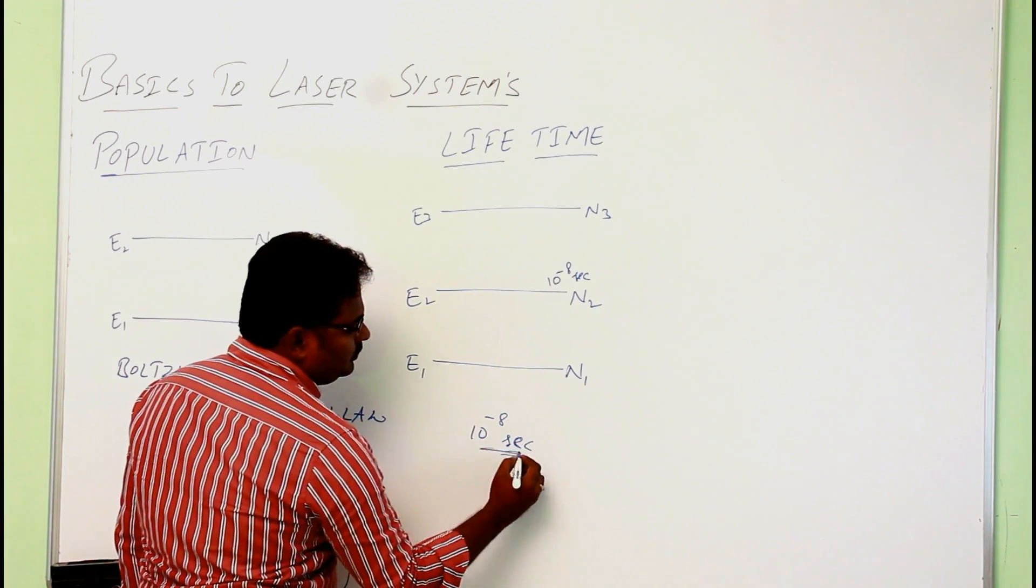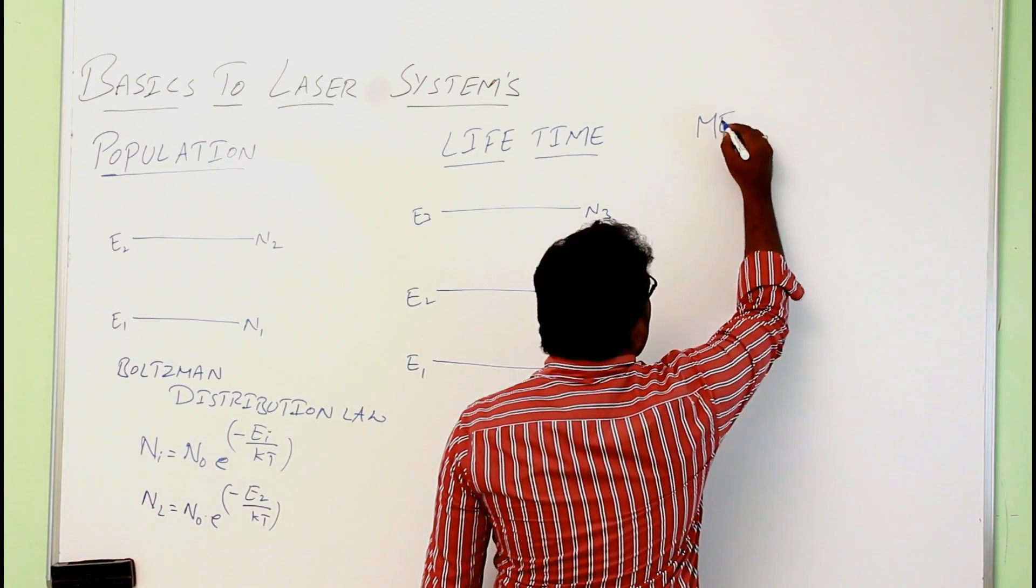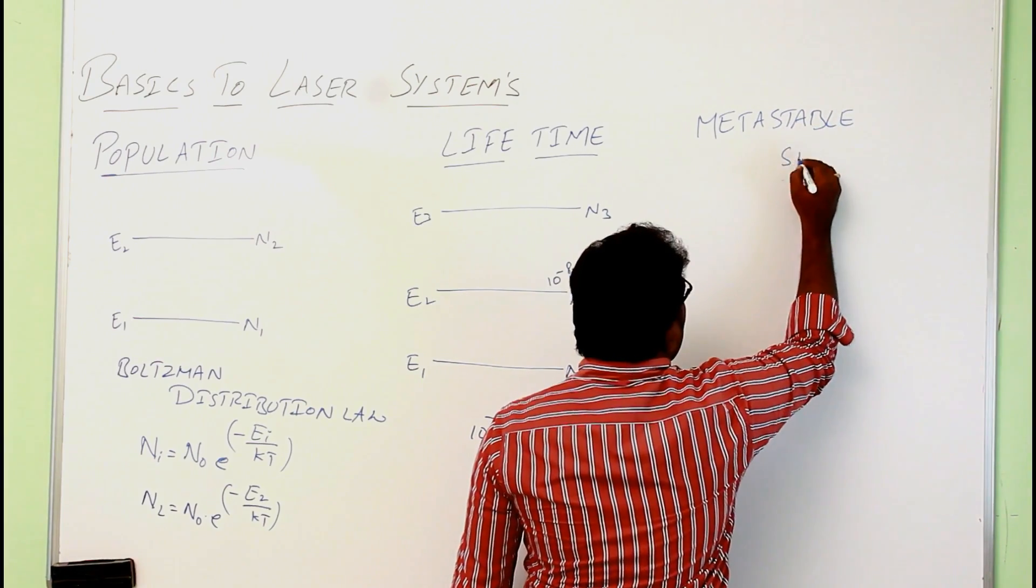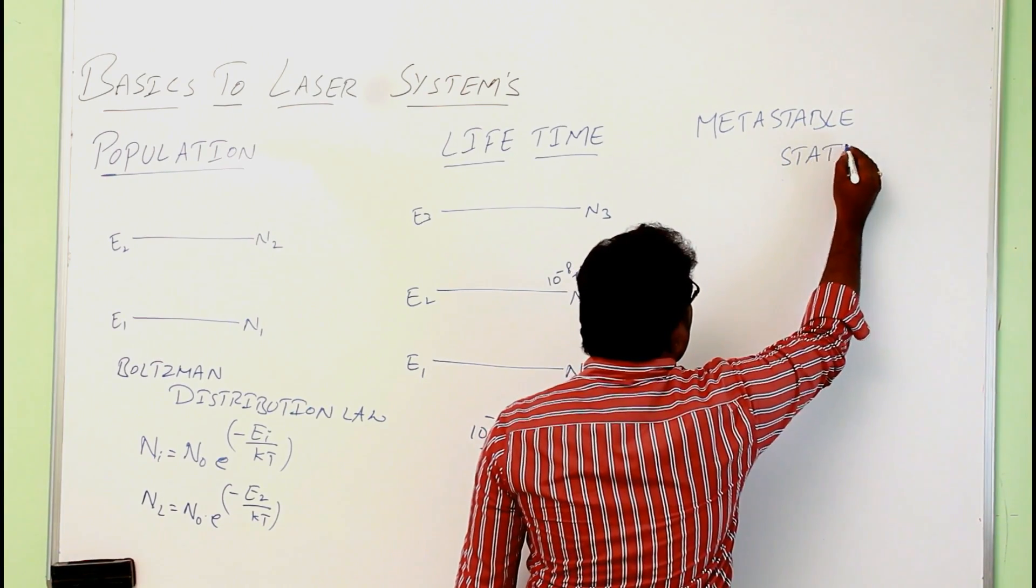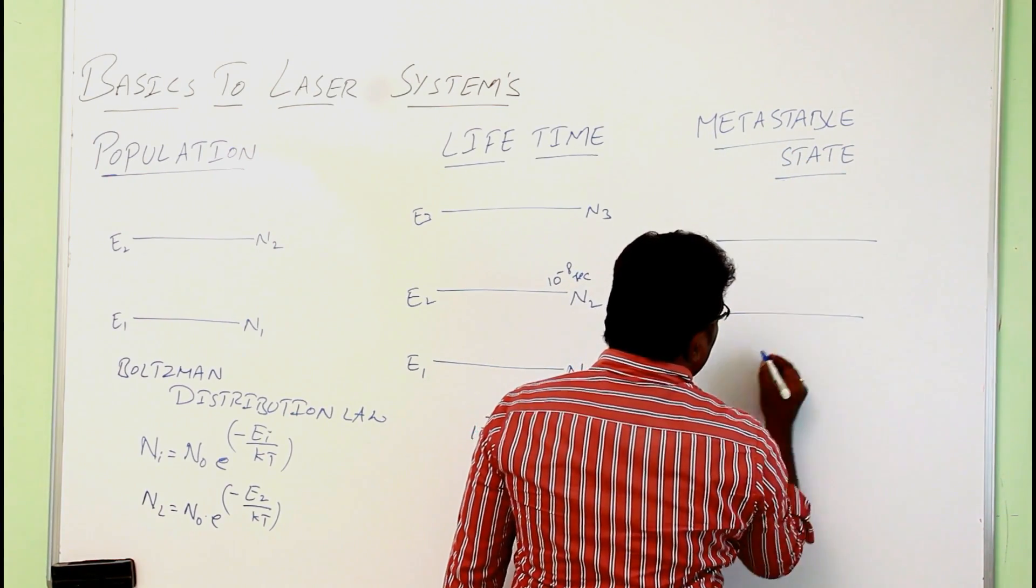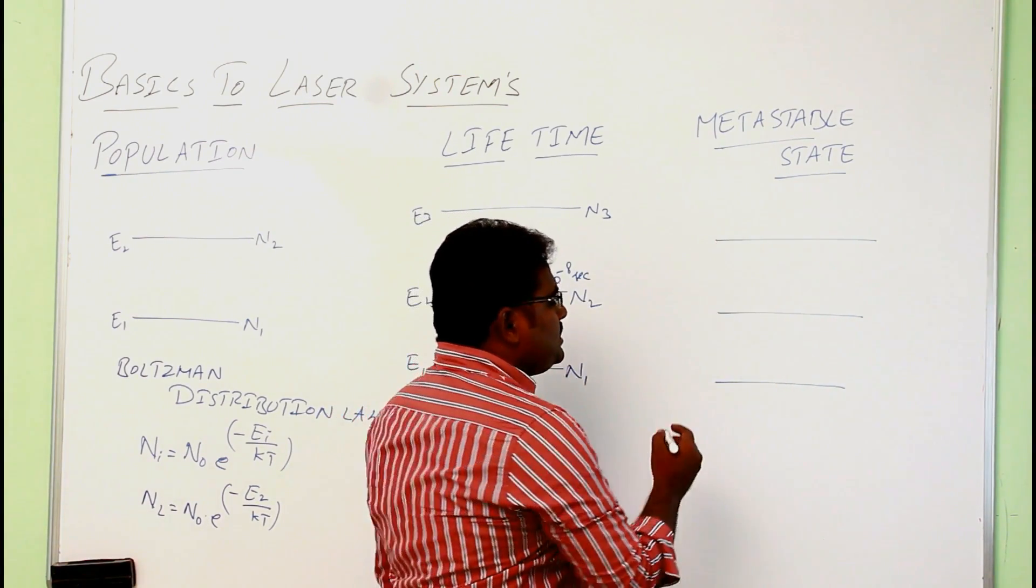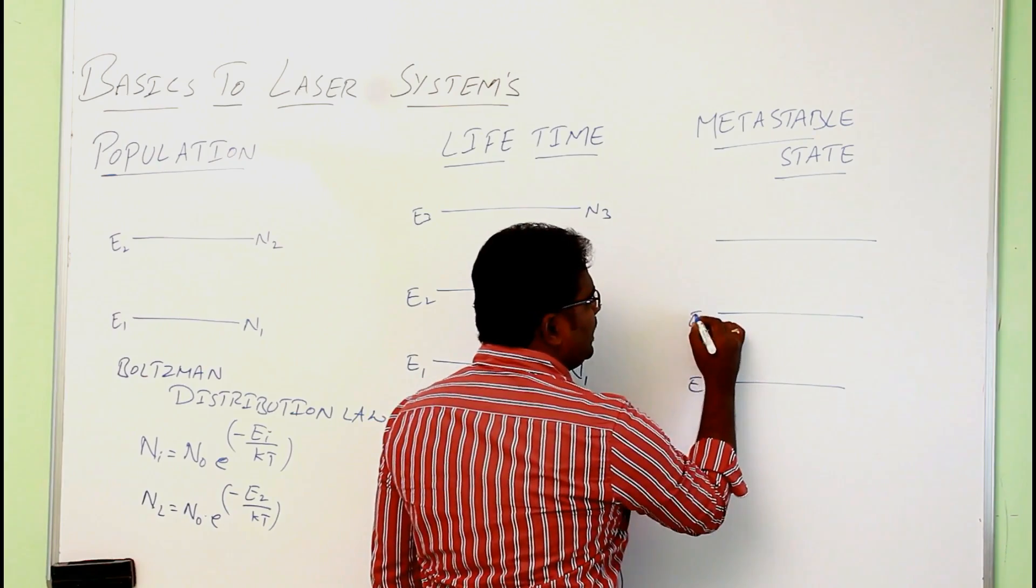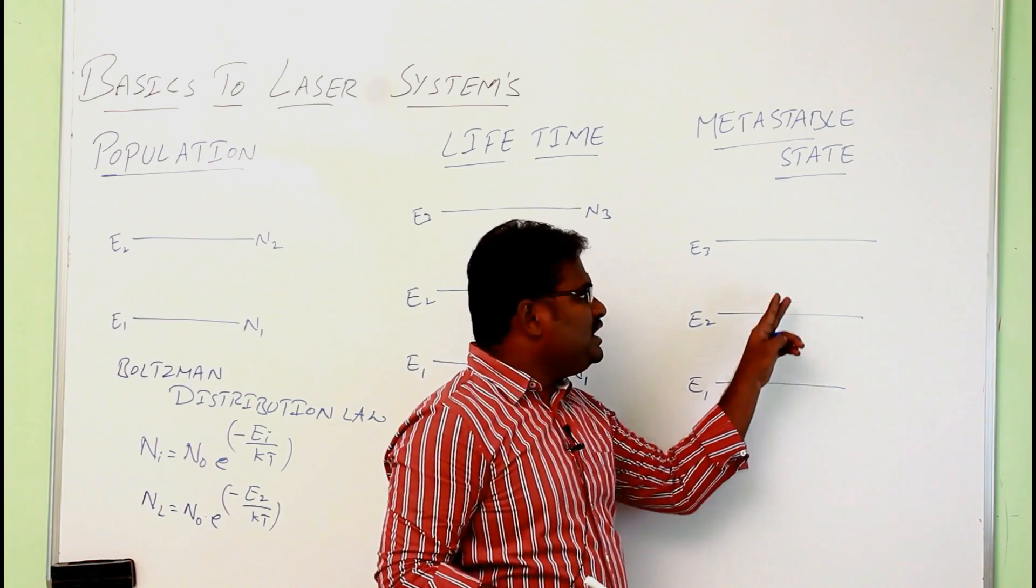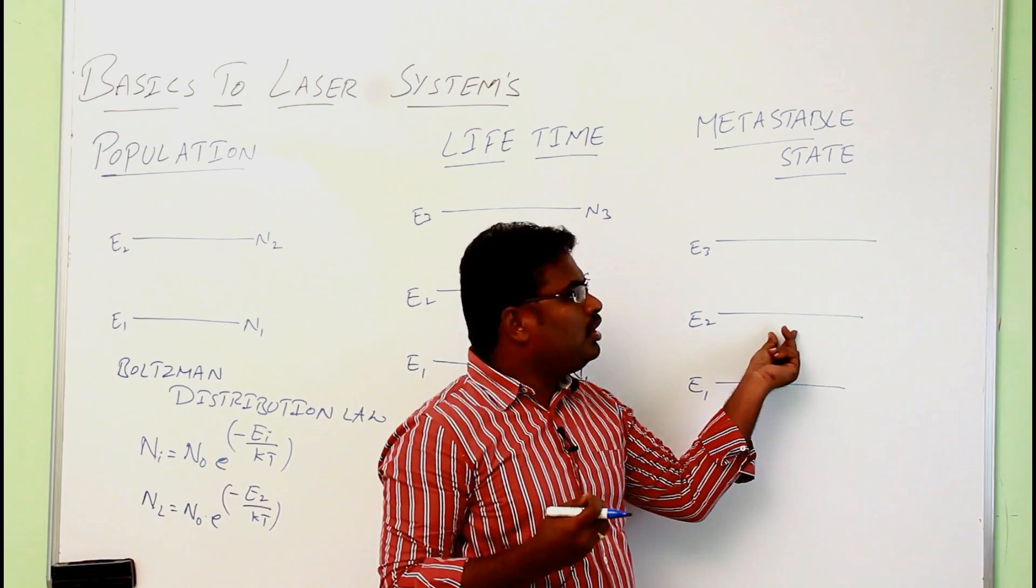Next, metastable state. Let there be three energy levels E1, E2, E3. In these states, this is ground state and these two are the excited states. The maximum time spent by the electron in which level, that level can be considered as the metastable state.